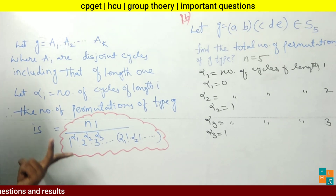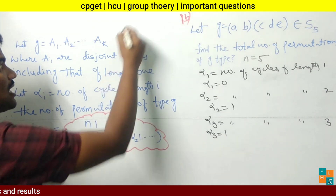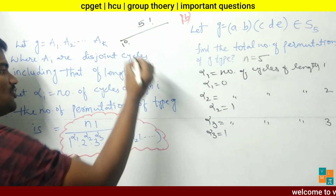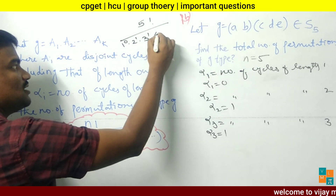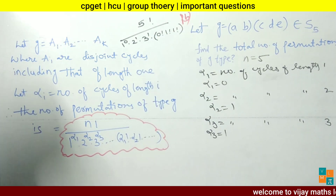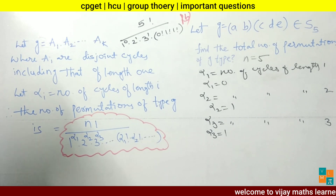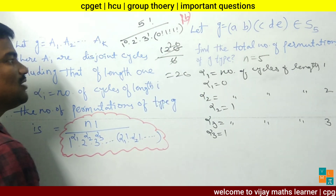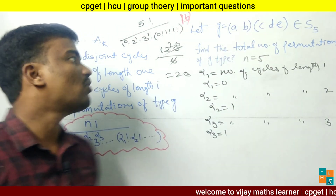Substituting all values in the formula: 5! divided by (1^0 · 2^1 · 3^1) into (0! · 1! · 1!). Since 1^0 = 1 and 0! = 1, the denominator simplifies to 2 · 3 = 6. So we get 120 divided by 6 equals 20. There are 20 permutations of G type in the group S5. This is a most important result of group theory.